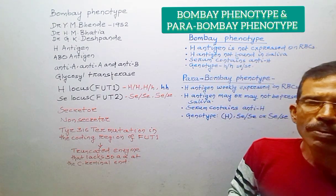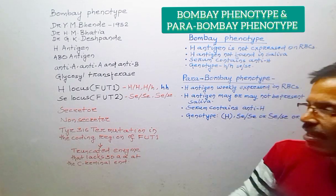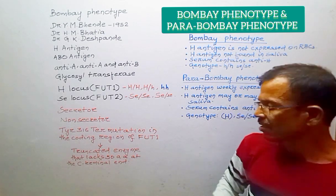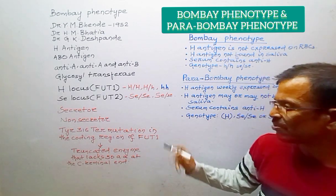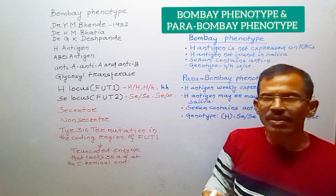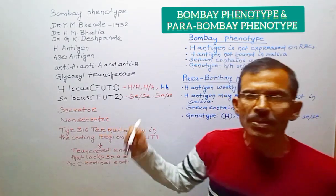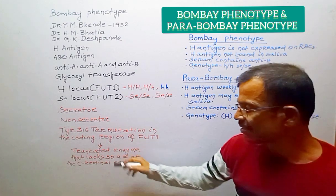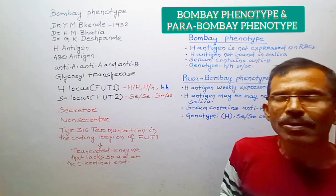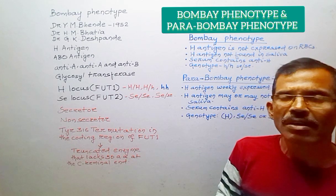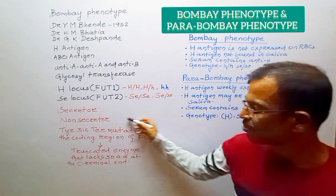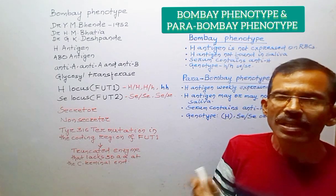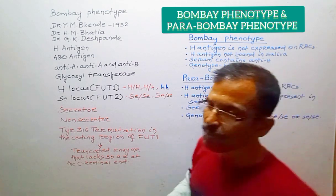The classical Bombay phenotype is caused by a Tyrosine 316 termination mutation in the coding region of the FUT1 gene. This mutation converts a normal codon into a termination codon, thereby resulting in the synthesis of a truncated enzyme that lacks 50 amino acids at the carboxyl terminal end. In the presence of this mutation, individuals become unable to synthesize the H antigen, and therefore it results in the Bombay phenotype.